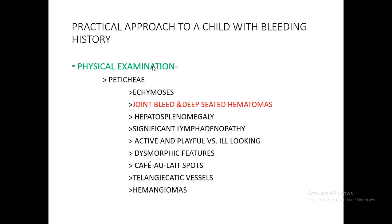On examination, key findings include: petechiae or purpuric skin lesions, hematomas, evidence of bleeding into joints such as hemarthrosis as in this patient, and visceromegaly in the form of lymphadenopathy or hepatosplenomegaly. We assess whether the patient is sick-looking, as in leukemia or lymphoma, or playful and active, as in ITP. We also note dysmorphic features, especially for congenital platelet problems or congenital aplastic anemia, and presence of telangiectasia.